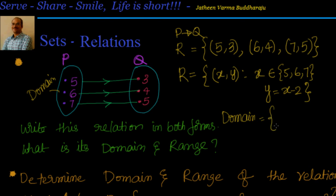So domain is nothing but equal to {5, 6, 7}. All 3 of them are part of the relation. So domain = {5, 6, 7}. Now what is range? Range is from the second set, all the elements which are part of the relation. All 3 of them are part of the relation, so I can directly say {3, 4, 5}.